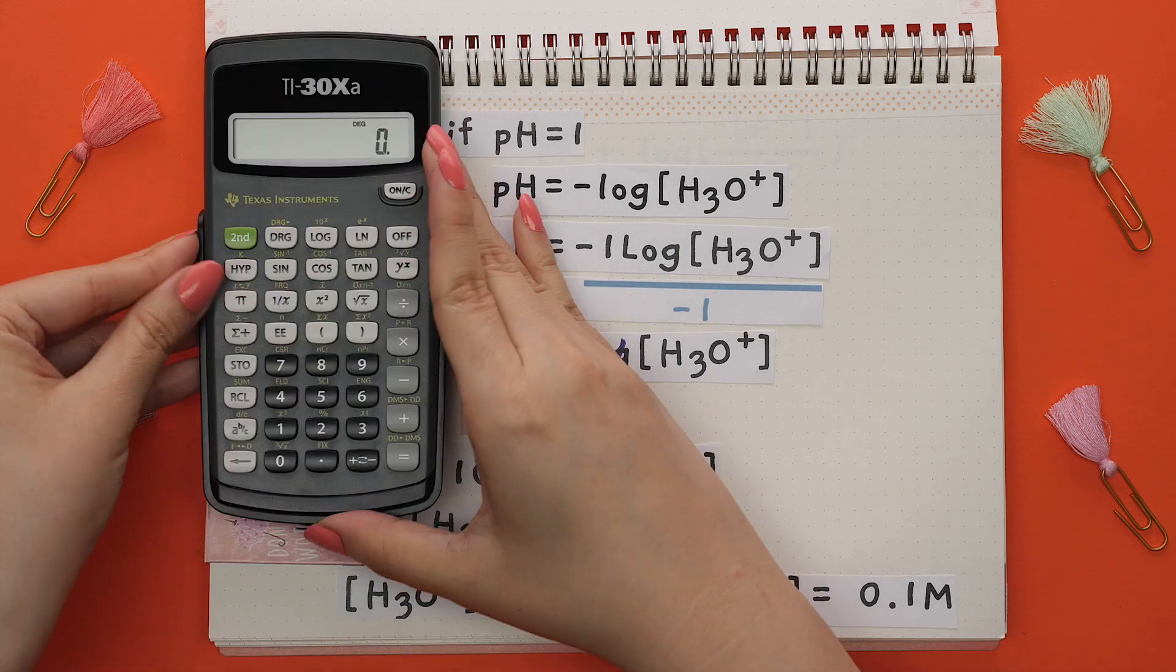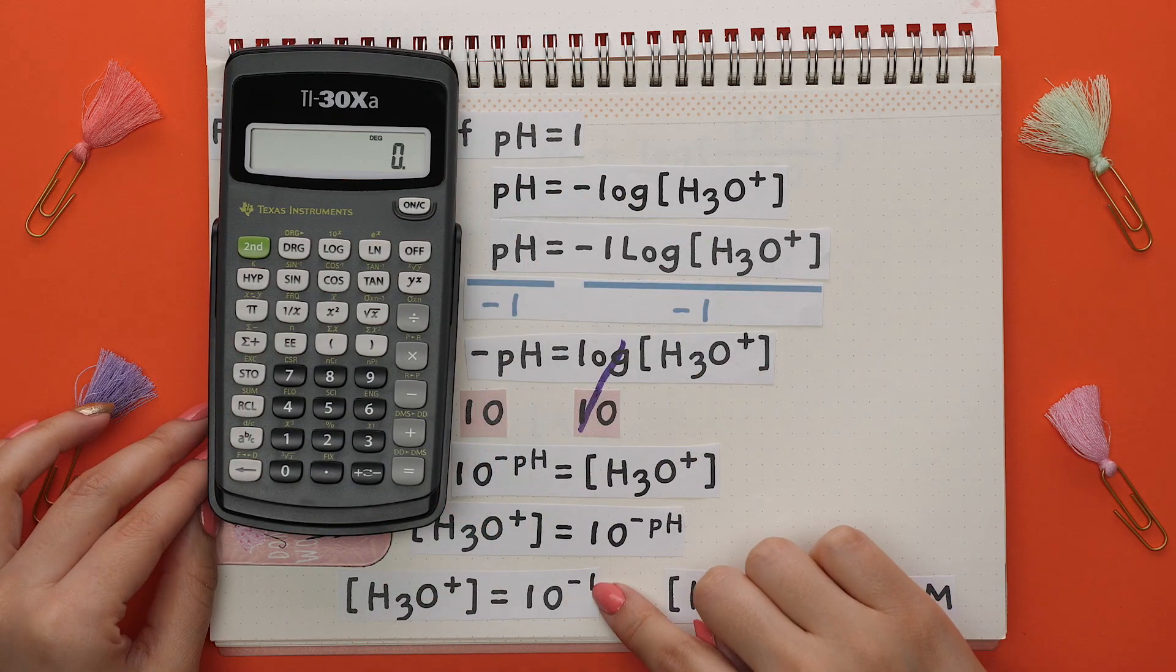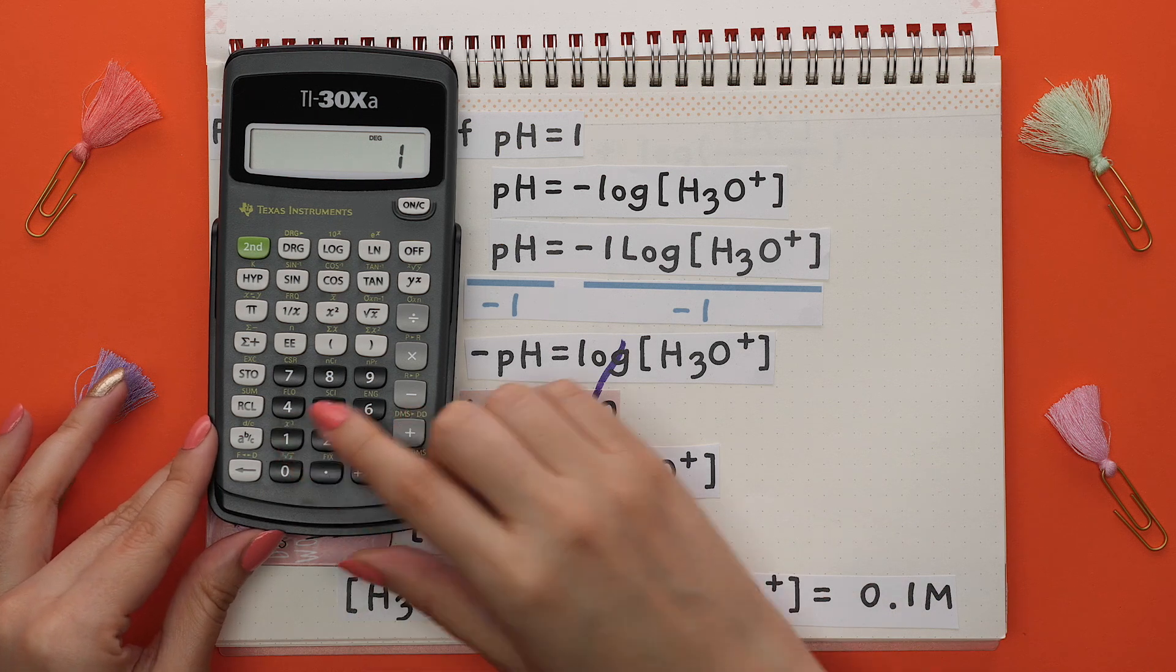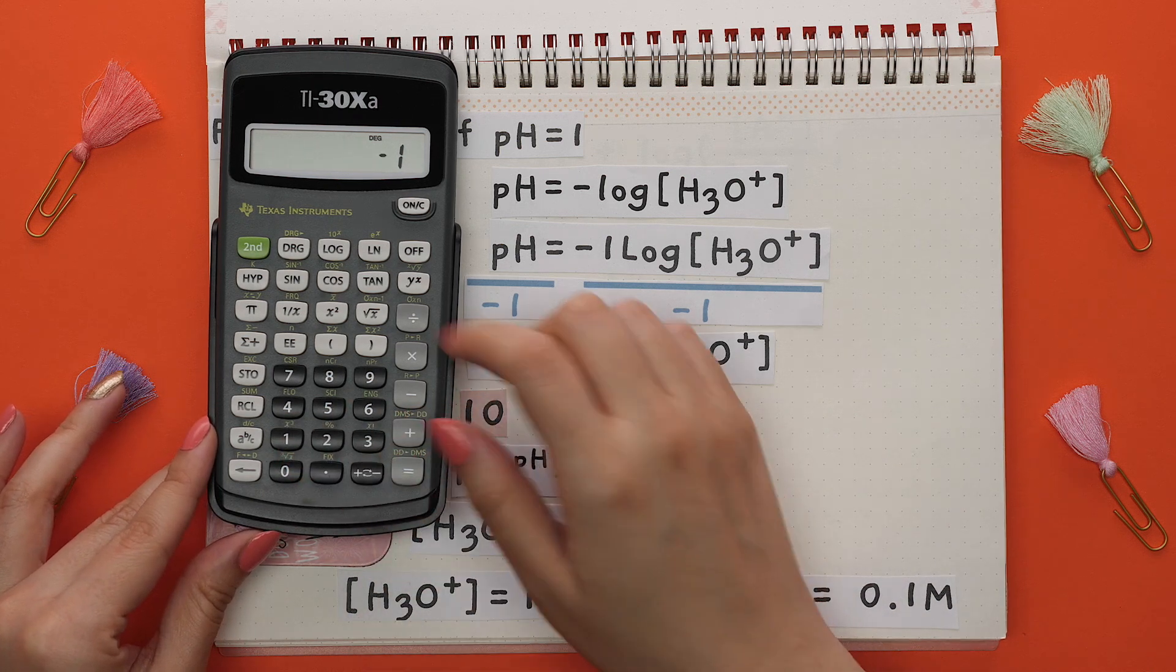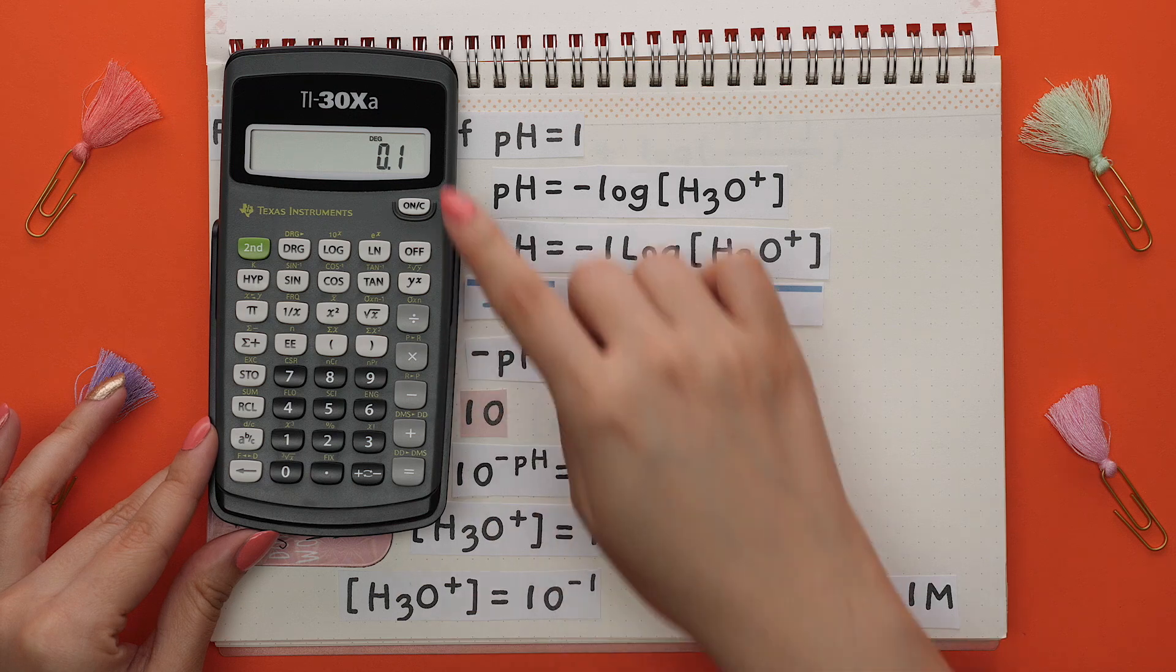To do this on a scientific calculator, plug in the exponent first of negative 1, enter the number, then press the negative sign, then press 2nd log and this is our value.